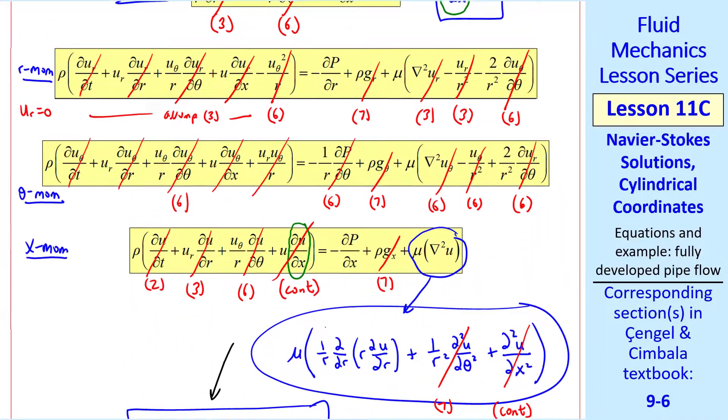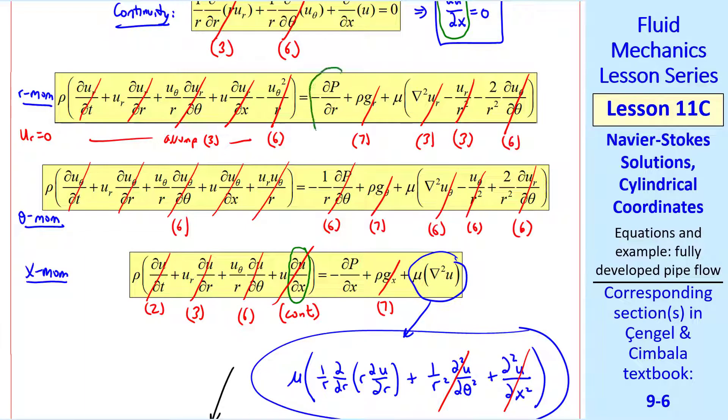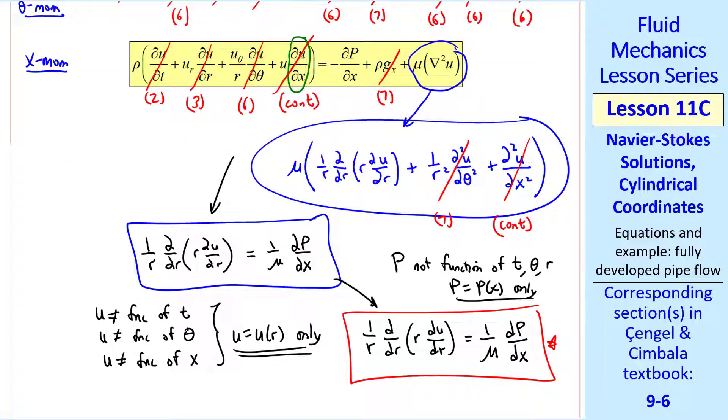So our x momentum equation reduces to these two terms. Let's go back and look at our r momentum equation. We had this one term left. Everything else went to zero. So the only way this equation is satisfied is if ∂p/∂r equals zero. So we've actually used that here, saying that pressure is not a function of r.